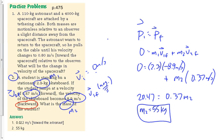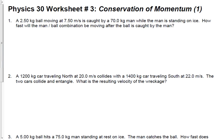I'm going to assign worksheet number three. However, if you have a lab due tomorrow, I understand that. I promised you at the beginning of the year that I'd be conscious of the amount of work you have outside of school. Worksheet number three will be due for Monday. We may have an opportunity to spend a few minutes working on it later in class as well. But if we don't, you don't have to worry about doing it tonight.